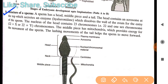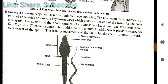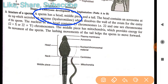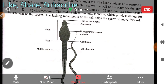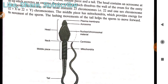The enzyme secreted by the acrosome is hyaluronidase, which dissolves the covering of the ovum to allow entry of the sperm. So the role of this enzyme is to dissolve the outer layer of the ovum for sperm entry.